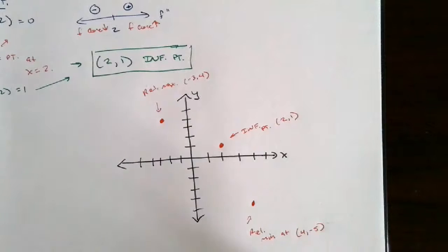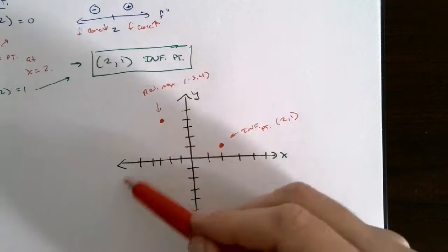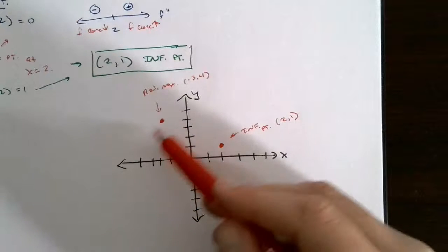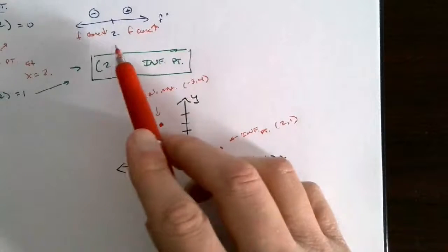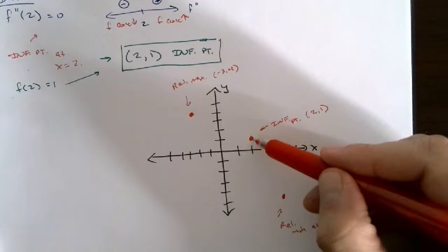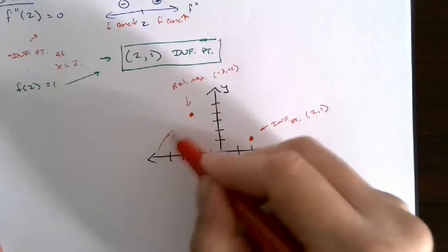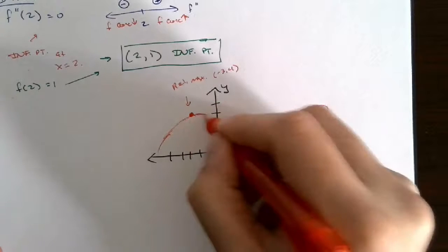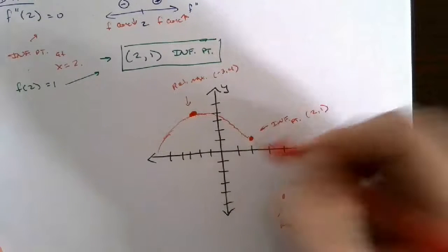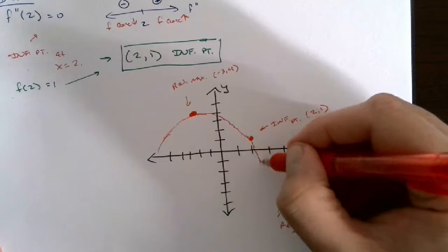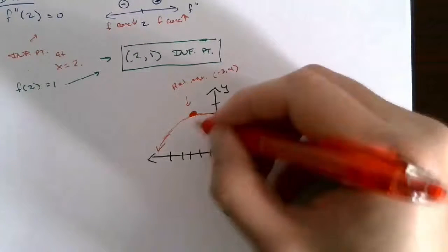From those plotted points, we can sketch the graph. We know we're concave down until we get to the inflection point — the relative max means the function goes up and then back down while concave down the whole time. Once we hit the inflection point at (2, 1), the function becomes concave up, continues downward to the minimum at (4, -5), and then goes back up.